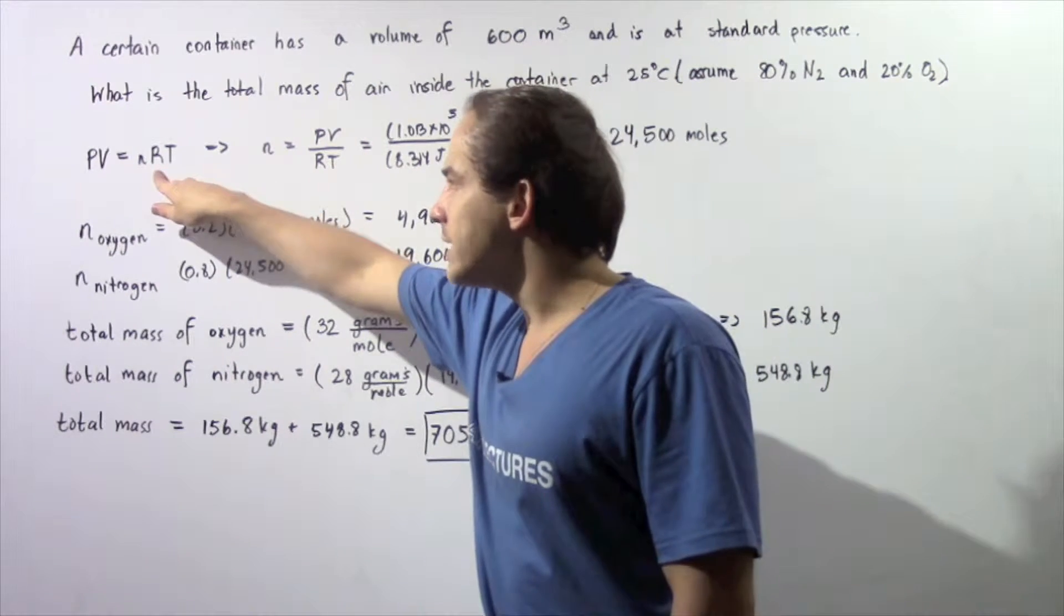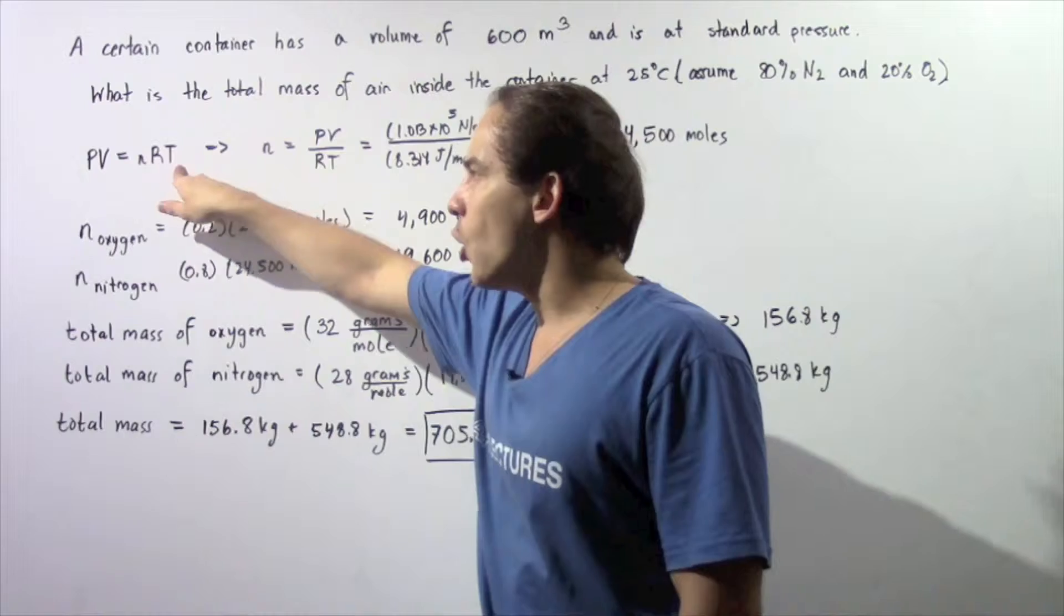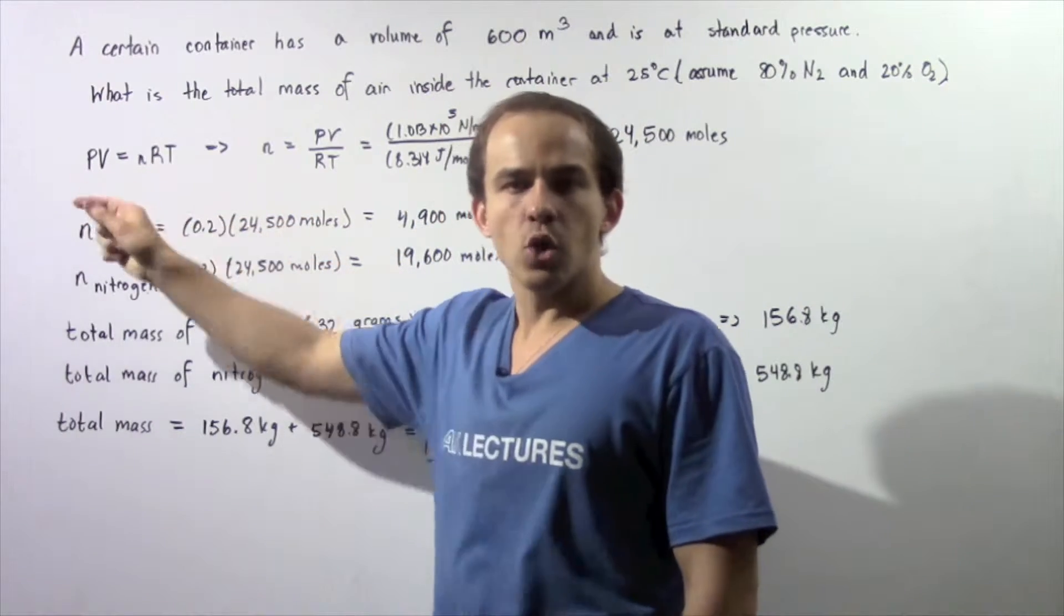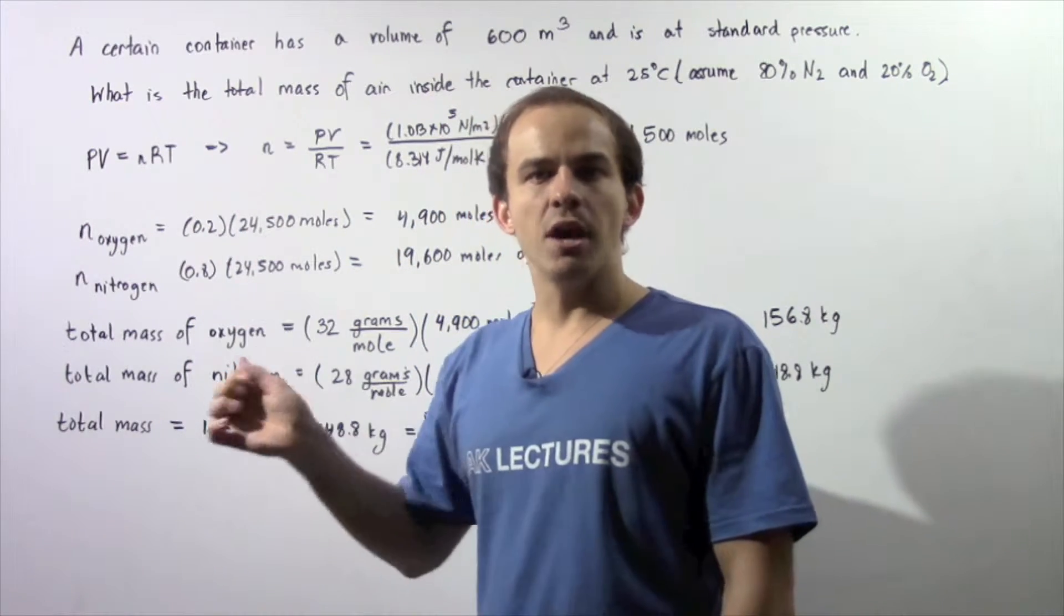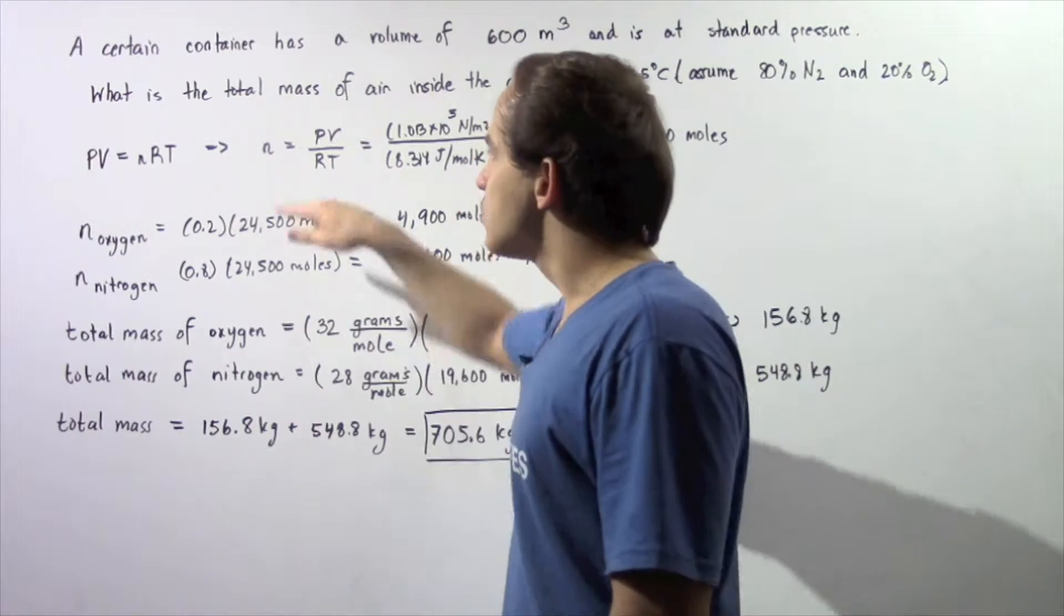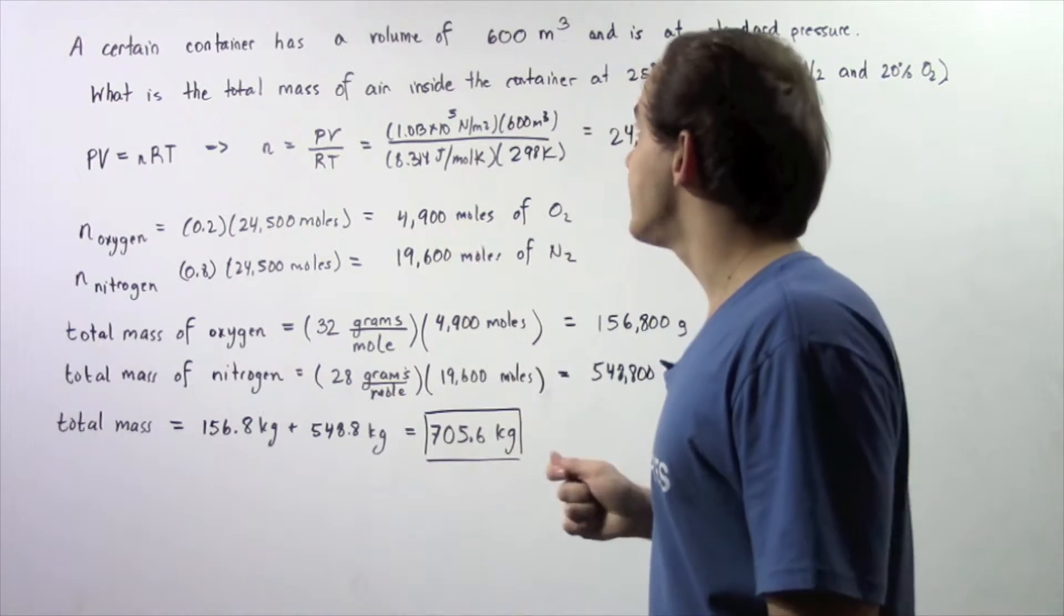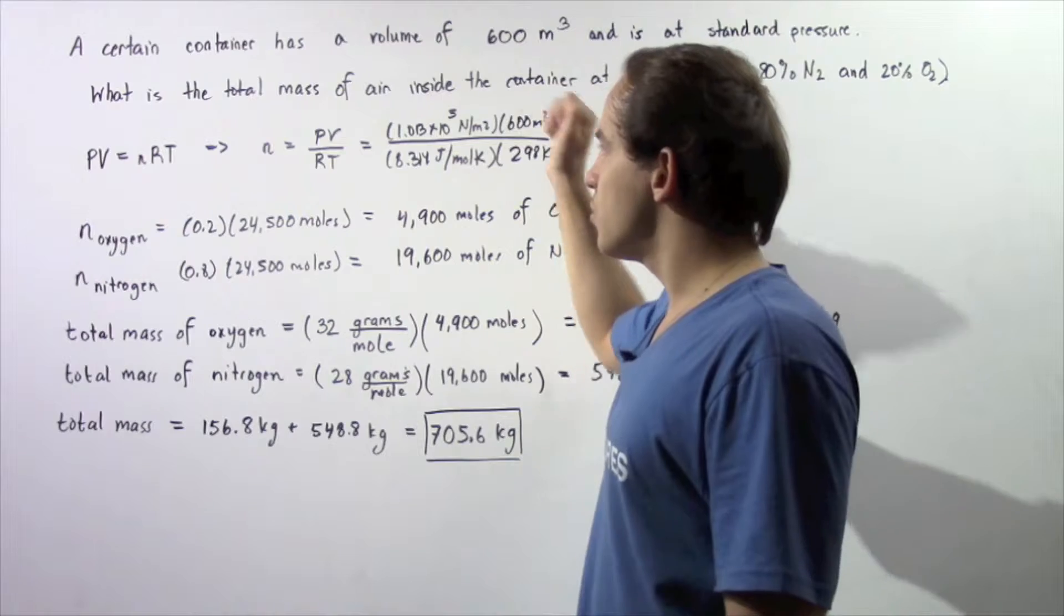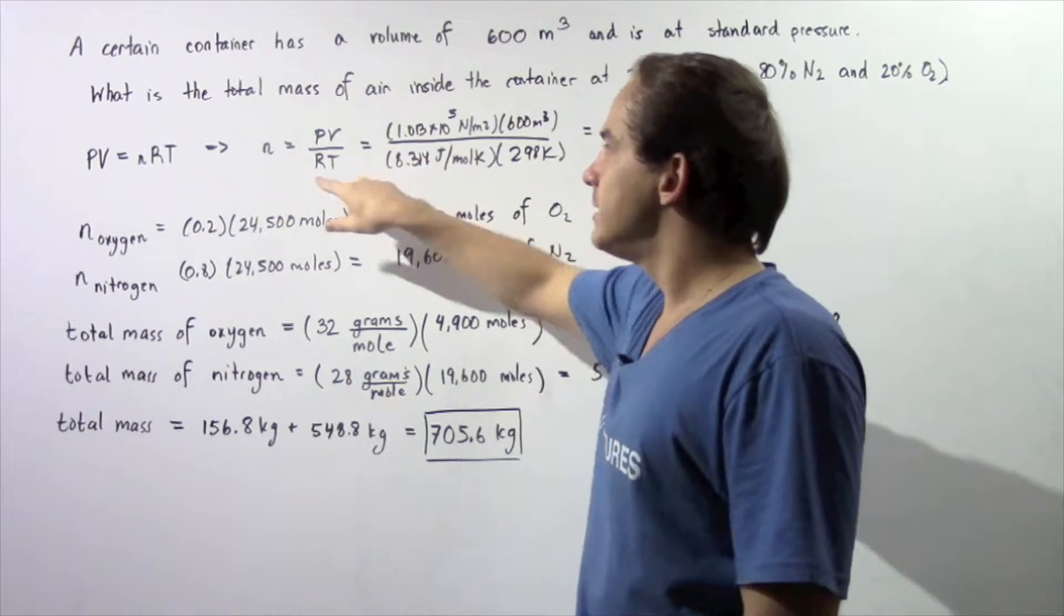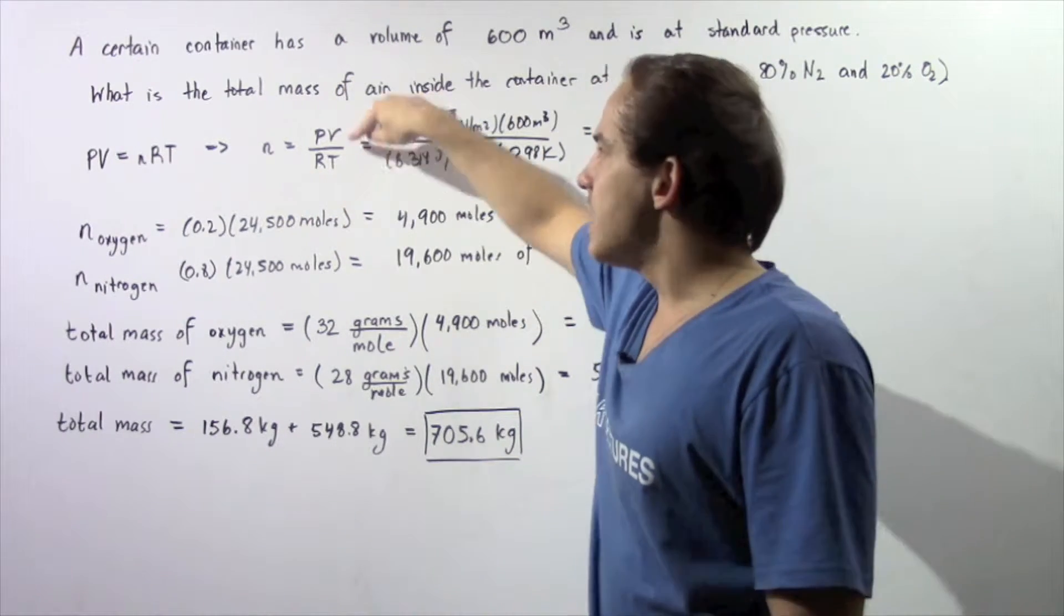Now, we know what R is, we know what T is, and we know what P and V is. So we can solve for n, the number of moles of gas. So n, the number of moles of gas inside our container, is equal to the ratio PV divided by RT.